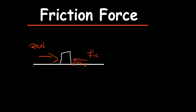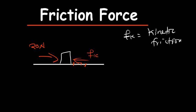When an object is moving, it has what we call kinetic friction. Kinetic friction, represented by FK, is the friction that is present when an object is moving.